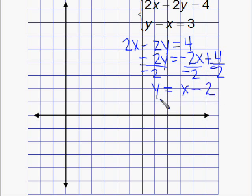So that tells us that our slope is 1, or the fraction 1 over 1, and our y-intercept is negative 2. So to graph this line, we would first find negative 2 on the y-axis.